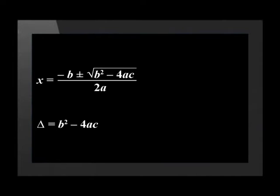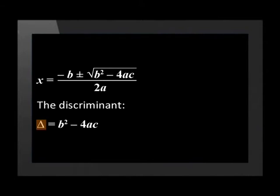This is the formula we use to describe what kind of roots or solutions for x we will get. We also sometimes refer to this formula as the discriminant, shown by the symbol delta. The reason we use this formula is because the type of number being square rooted will completely determine the type of number we get for x.